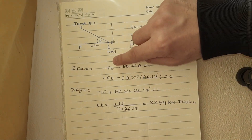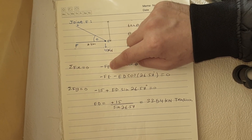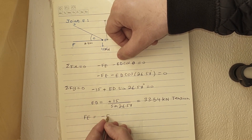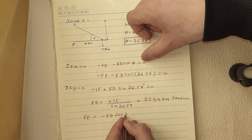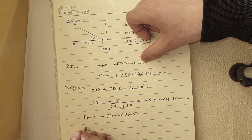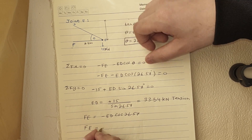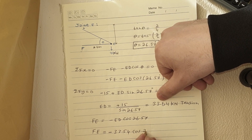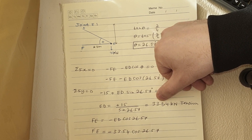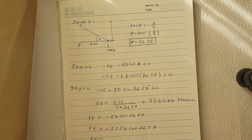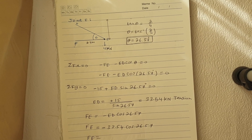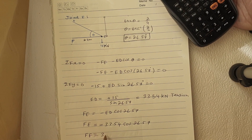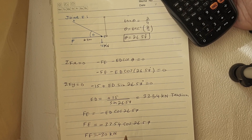Now finding FE: FE = −ED·cos(26.57°) = −33.54·cos(26.57°) ≈ −30 kN. So FE is −30 kN, which is compression.